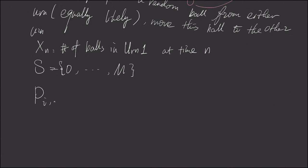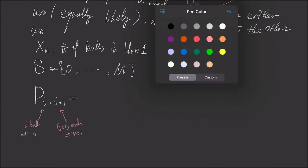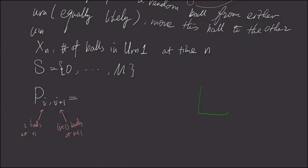And first, let's consider the probability of i to i plus one. So i means we have i balls at time n, and i plus one means we have i plus one balls at time n plus one.